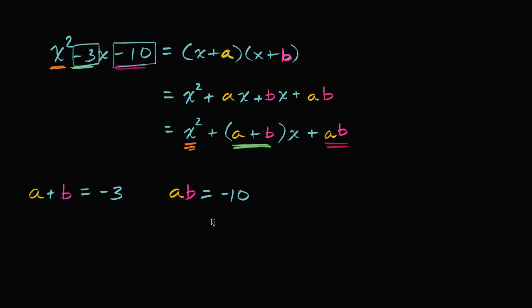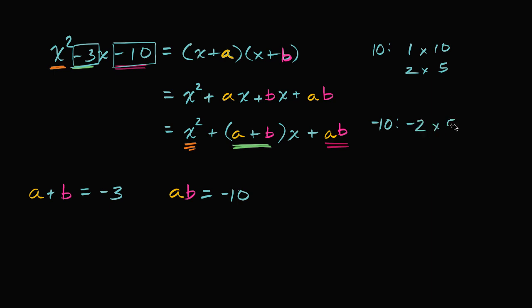So what could those two numbers be? Since their product is negative, they must have different signs. Since their sum is negative, the negative number must be the larger one. Factoring 10: we could have one times 10, or two times five. Two and five are interesting because if one is negative, their difference is three. With negative 10: negative two times five gives a sum of positive three — not what we want. But positive two times negative five gives a product of negative 10 and a sum of negative three. That's it!